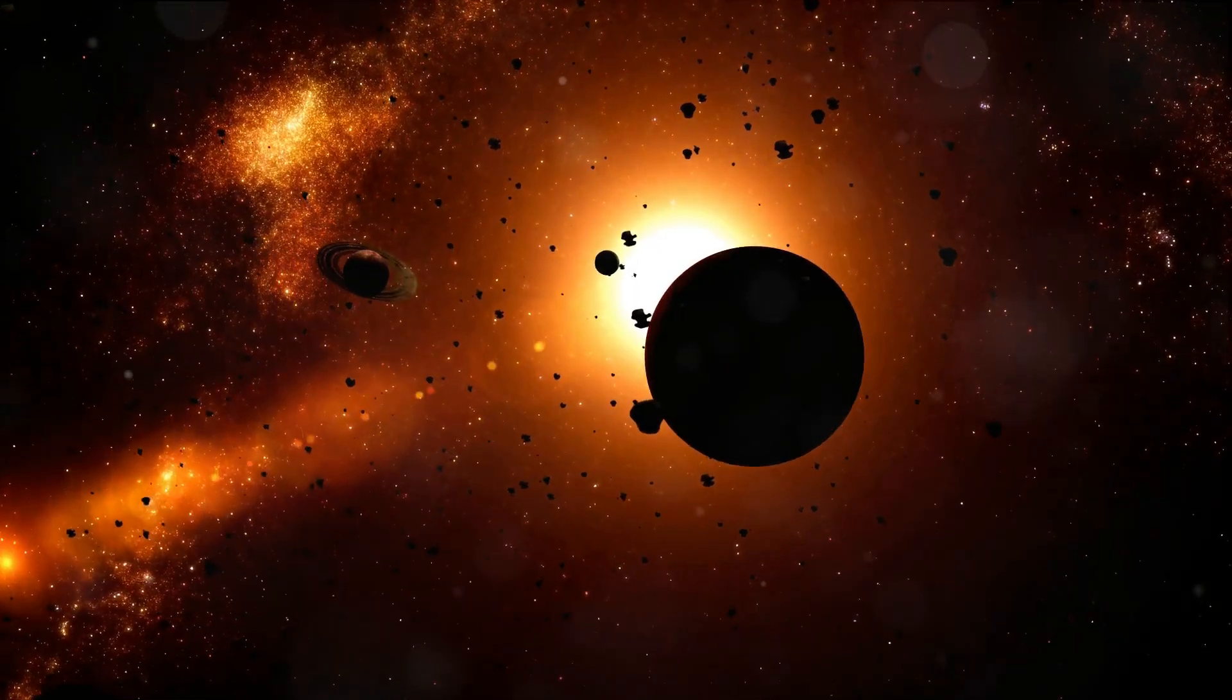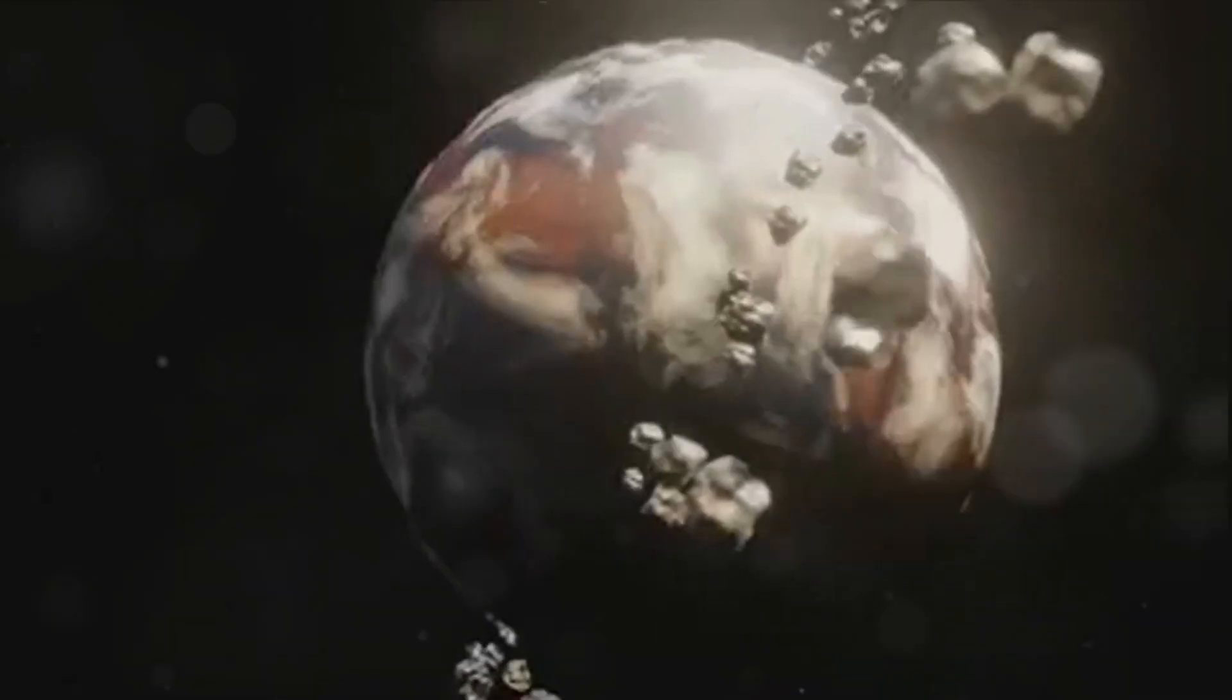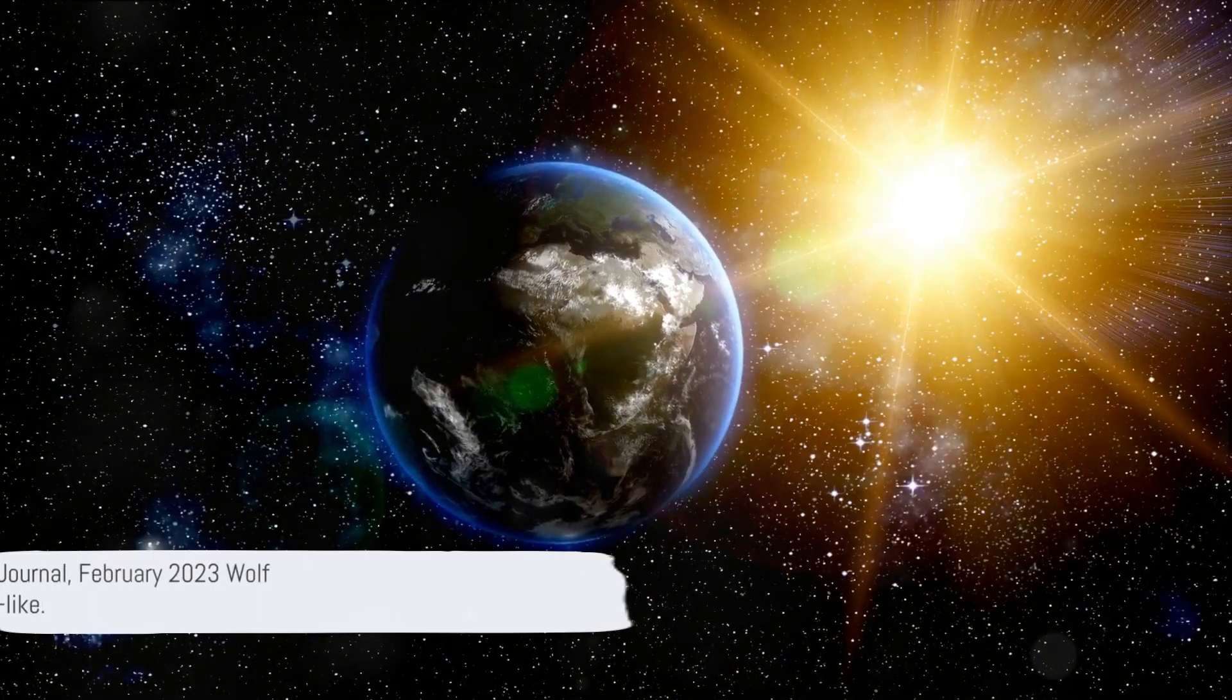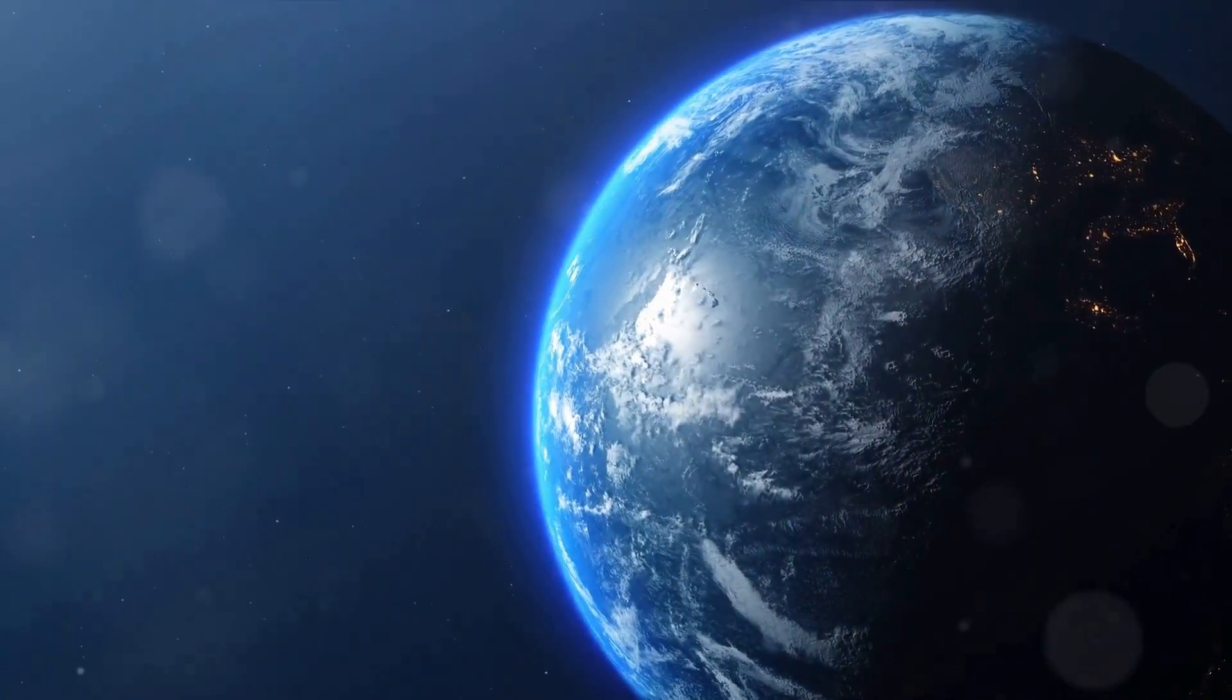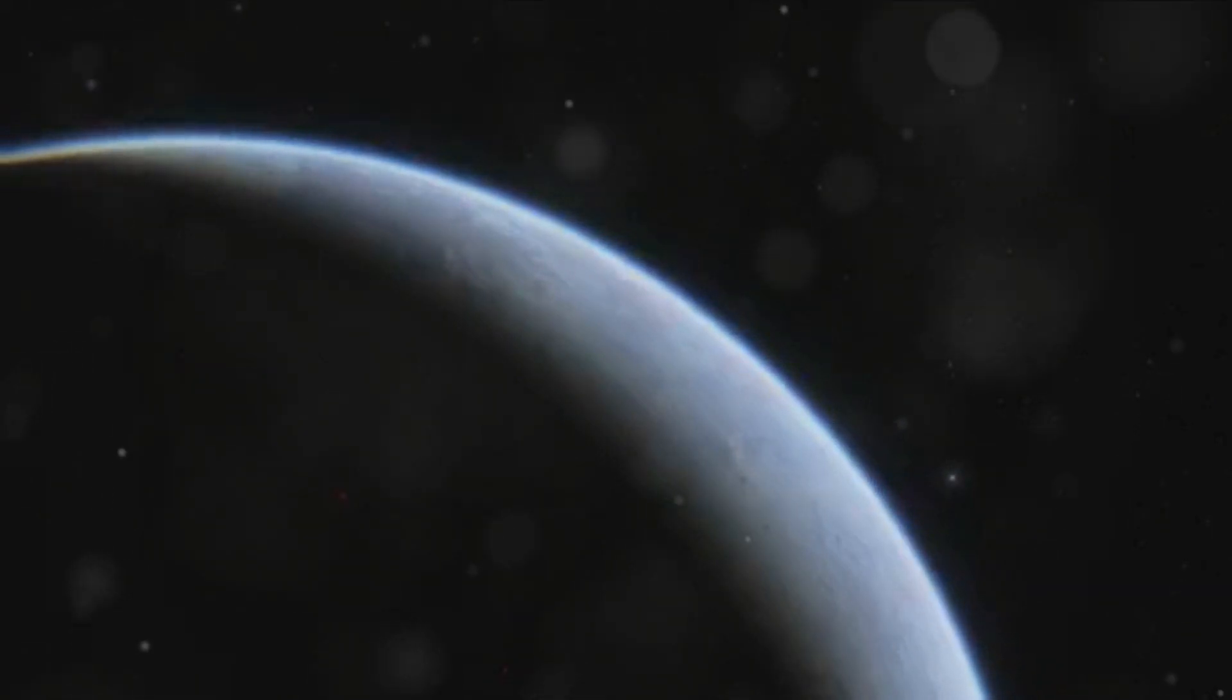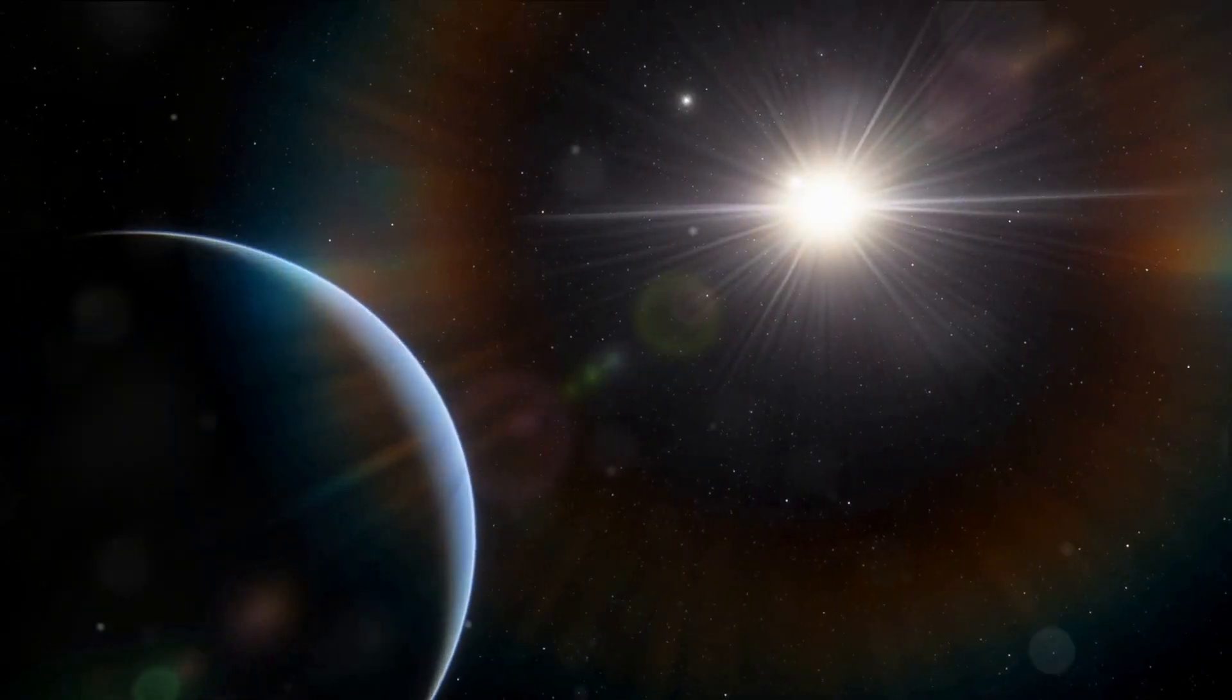But TOI-700E isn't the only exoplanet that piqued scientists' interest. Enter Wolf 1069b, another Earth-like exoplanet in our cosmic neighborhood. This celestial body, discovered by a team of international astronomers, is remarkably similar to our home planet. And it's relatively close to us, at least in galactic terms. The details of this discovery were published in the journal Astronomy and Astrophysics in February 2023. Wolf 1069b is intriguingly Earth-like. It has a mass that's approximately 1.26 times that of Earth, and a size about 1.08 times that of our home planet. These similarities in mass and size suggest that Wolf 1069b might have a composition similar to Earth's, with a rocky surface and a dense atmosphere.